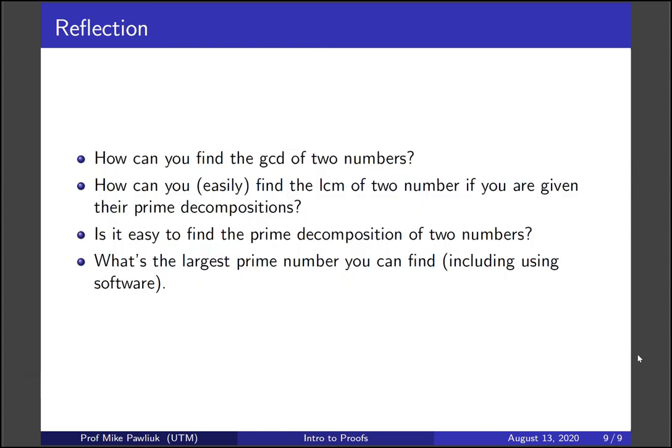Let's take a moment to reflect. How can you find the GCD of two numbers? How can you easily find the least common multiple of two numbers if you're given their prime decompositions? Is it easy to find the prime decomposition of two numbers? What's the largest prime number you can find, including using software if you want?